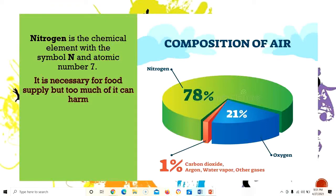Let's first unlock what nitrogen is. Nitrogen is the chemical element with the symbol N and atomic number 7. It is necessary for food supply, but too much of it can be harmful. You can check that in your periodic table or Google it. Looking at the illustration, 78% of the composition of air is actually nitrogen, 21% is oxygen, and 1% consists of carbon dioxide, argon, water vapor, and other gases.